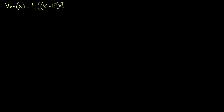We could replace this E[x] here with mu to mean the mean of x. This is the way the variance is defined. We also learned a more useful, more practical formula: we can express the variance as the difference between the expected value of the square of x — E[x²] — and the square of just the expectation of x, (E[x])².